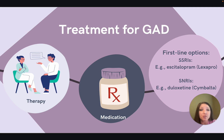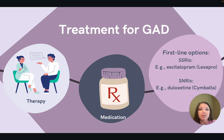What medications are considered first-line treatment? That's going to be those selective serotonin reuptake inhibitors, or SSRIs, such as escitalopram or Lexapro, and serotonin norepinephrine reuptake inhibitors, or SNRIs, like duloxetine or Cymbalta. Those are the preferred initial pharmacotherapy in the treatment of generalized anxiety disorder. As clinicians, we want to tailor the treatment plan for each particular patient.